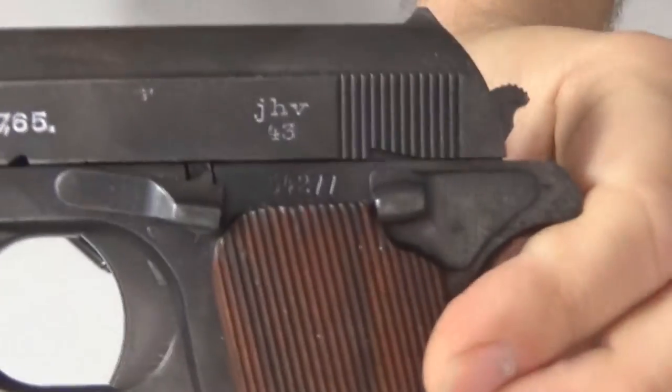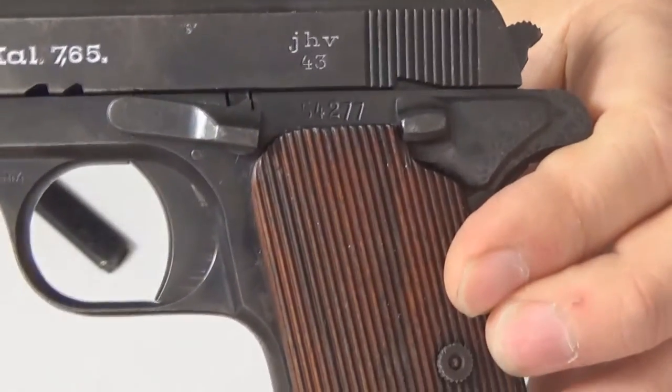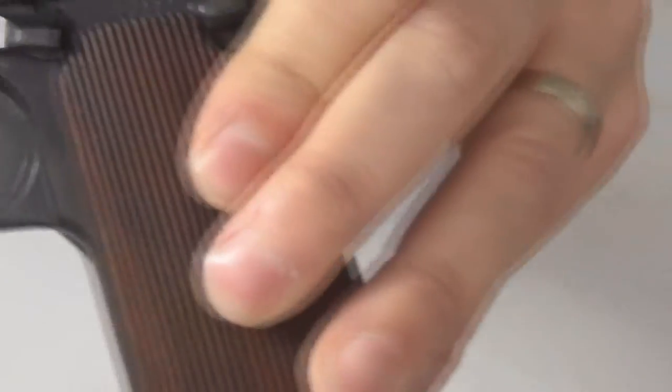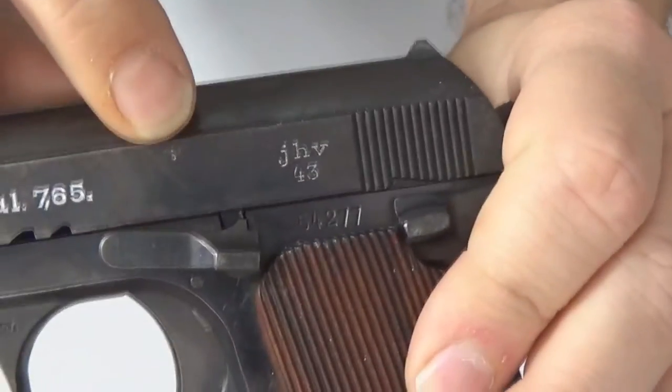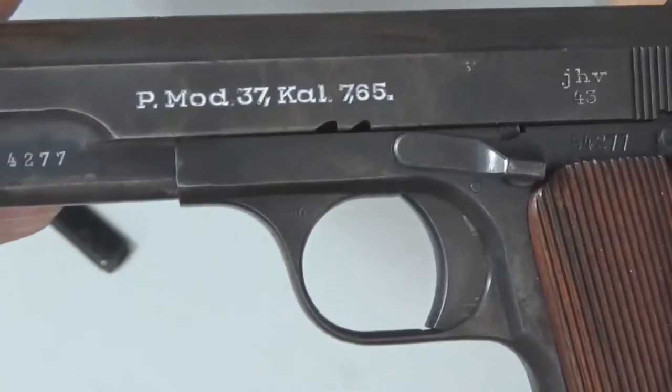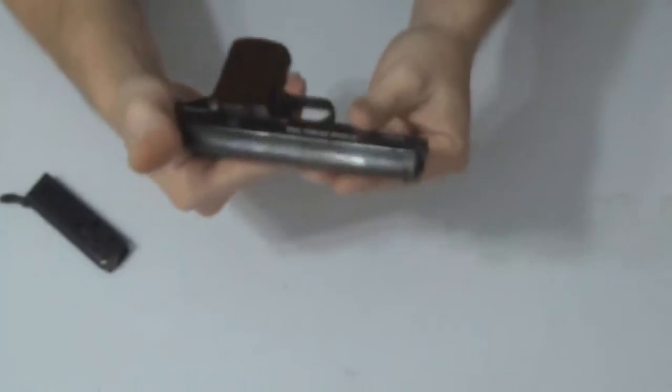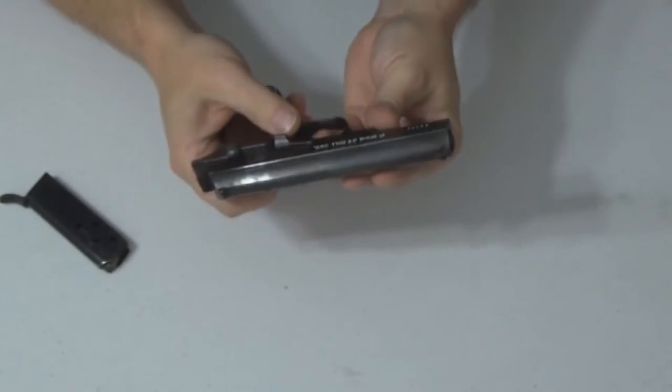Here we have the year, 1943, and it is Waffenamt stamped here and then other places on the barrel as one. And the slide is a second.